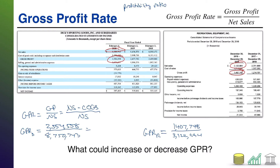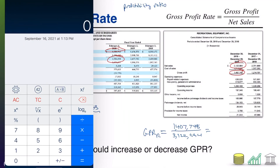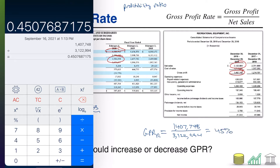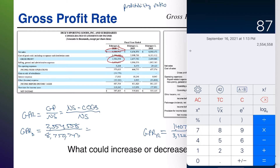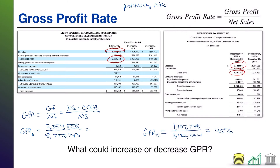We're going to need a calculator to figure out what this works out to. Starting with REI: 1,407,748 over 3,122,994 gives us a rate of approximately 45%. Going over to Dick's: 2,554,558 over 8,750,743 puts us at a rate of approximately 29%.